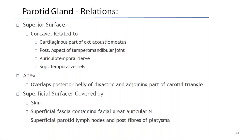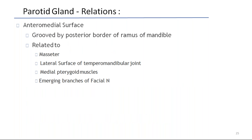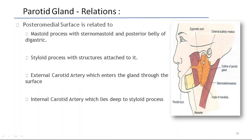The apex overlaps the posterior belly of the digastric and the adjoining part of the parotid gland. The superficial surface is covered by skin, superficial fascia containing the facial and great auricular nerves, superficial parotid lymph nodes, and posterior fibers of platysma. The anteromedial surface relations are grooved by the posterior border of the ramus of mandible, related to masseter, lateral surface of the TMJ, medial pterygoid muscles, and emerging branches of the facial nerve. The posteromedial surface is related to the mastoid process with sternomastoid and posterior belly of digastric, the styloid process with structures attached to it, the external carotid artery entering the gland, and the internal carotid artery lying deep to the styloid process.